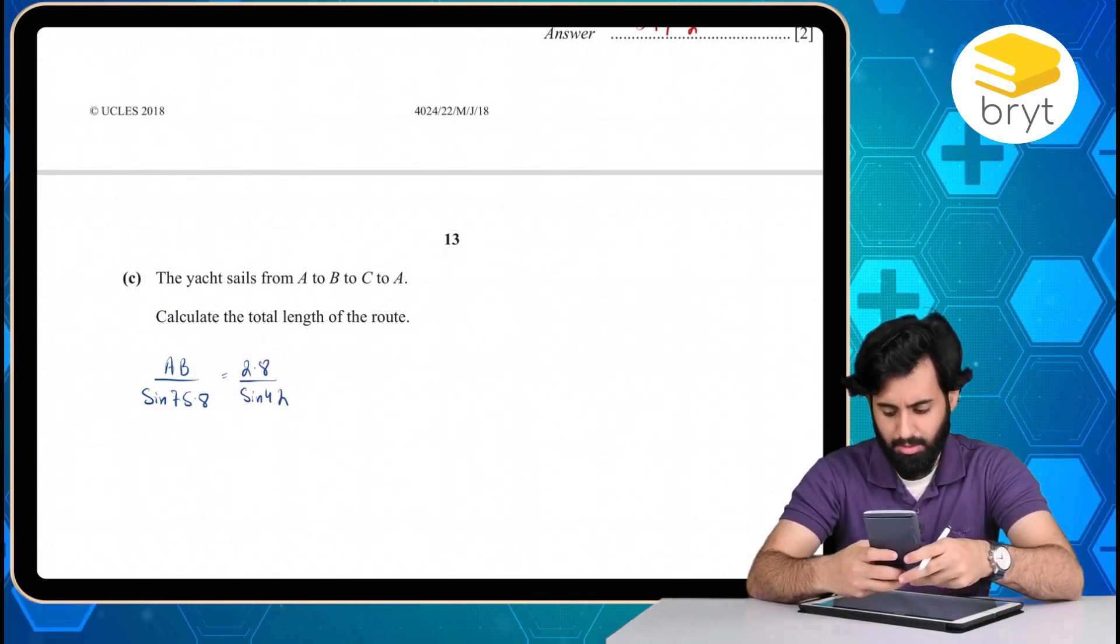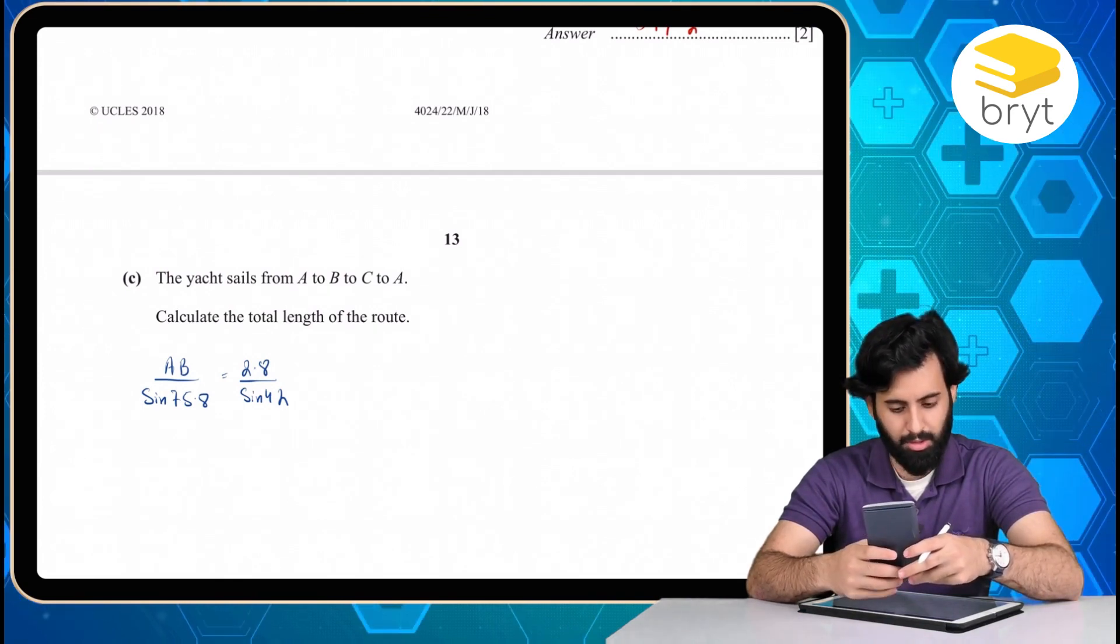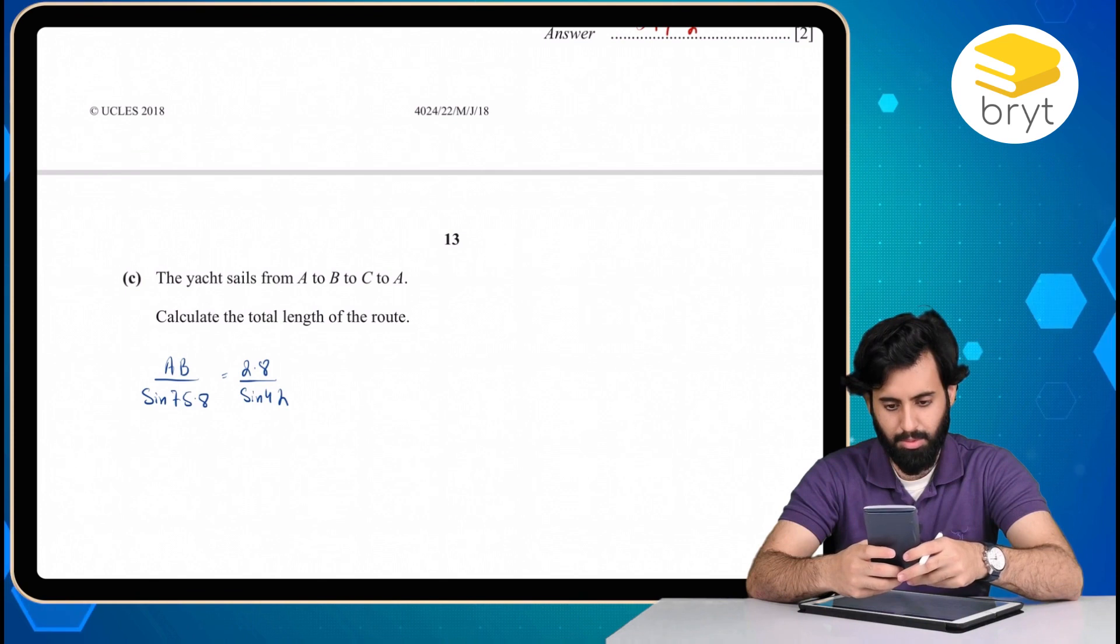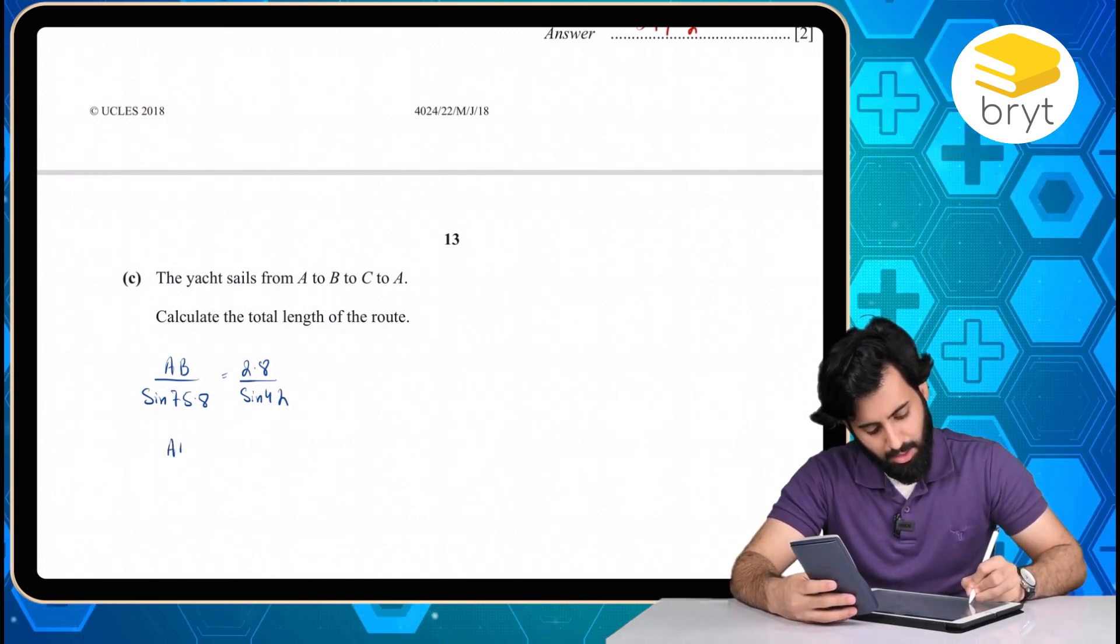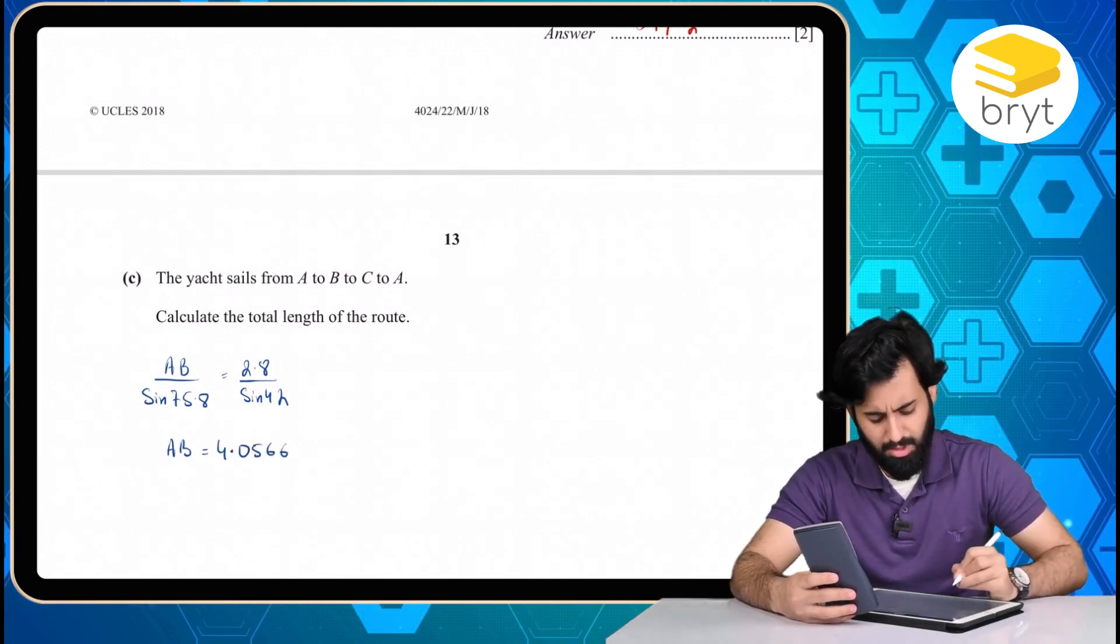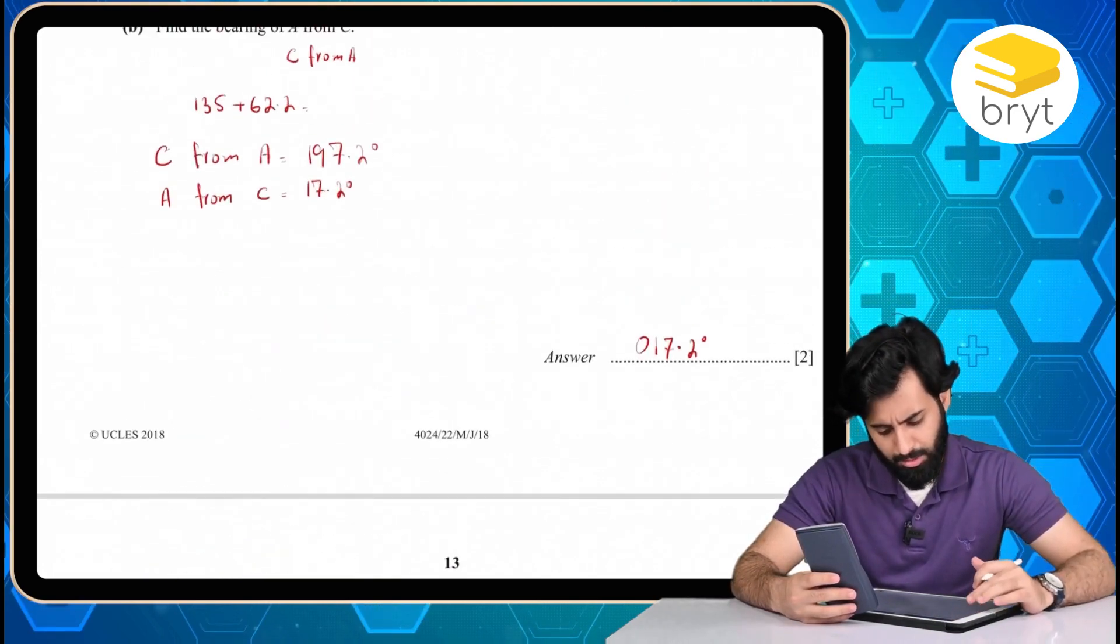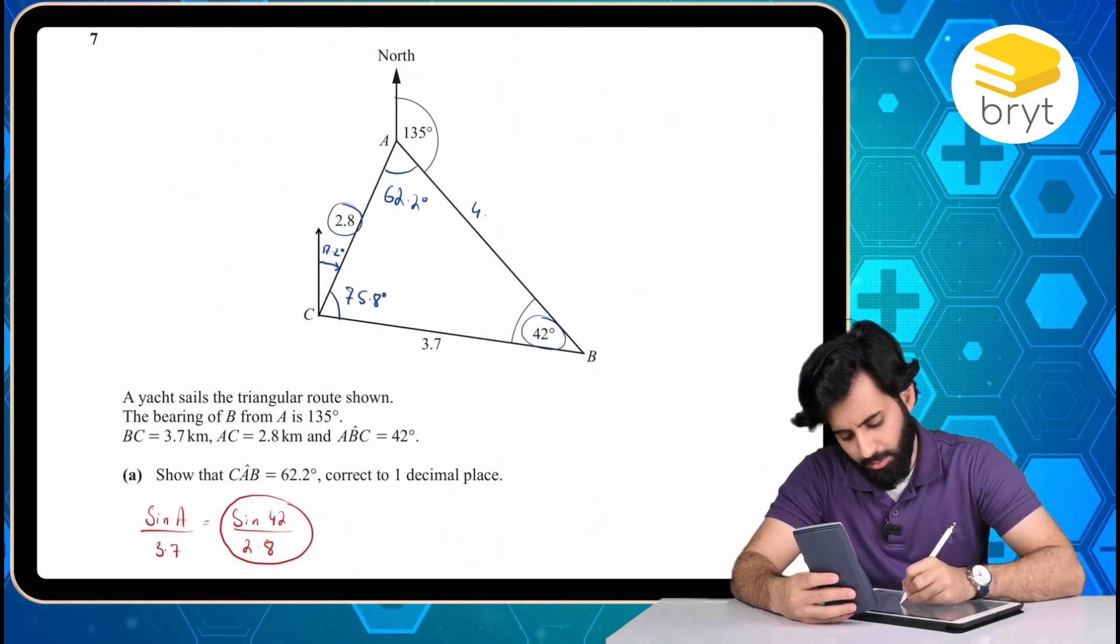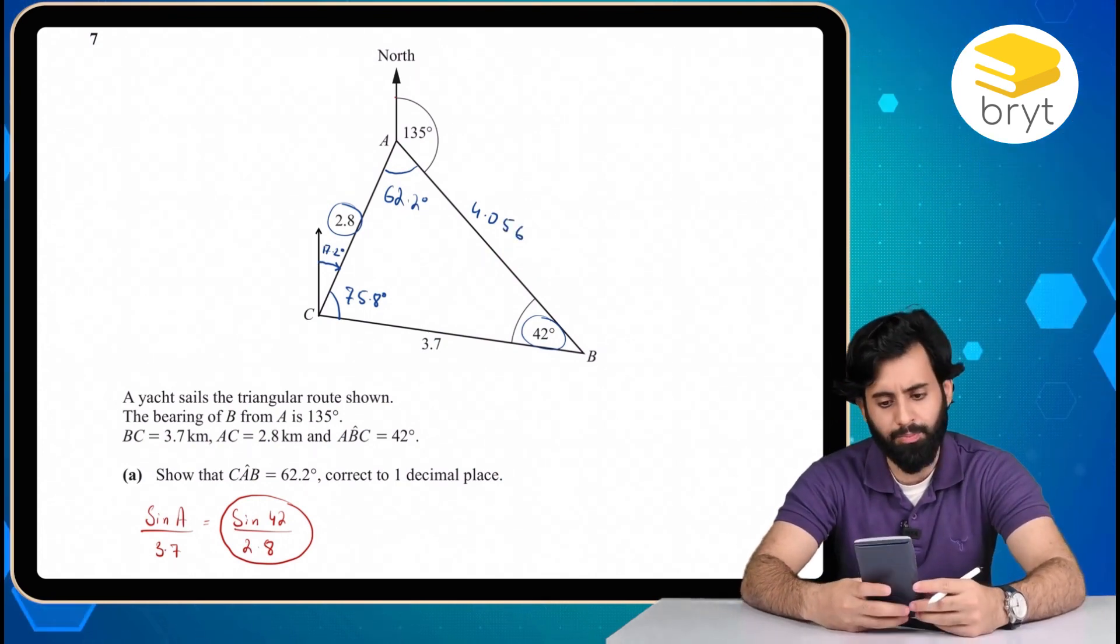So just a matter of cross-multiplying now. 2.8 divided by sine of 42, right close, into sine of 75.8. And there you have it. We know that AB is equals to 4.056677. So we'll just, let's just stop here. Kilometer, is it? Yeah, it is kilometer. 4.05. So I'm not going to round this off right now. So here's what I'll do. I have this value in my calculator.